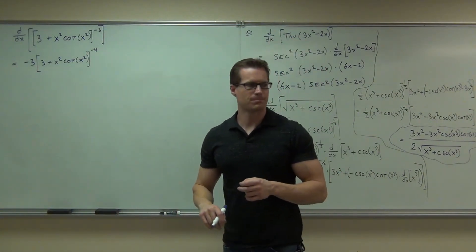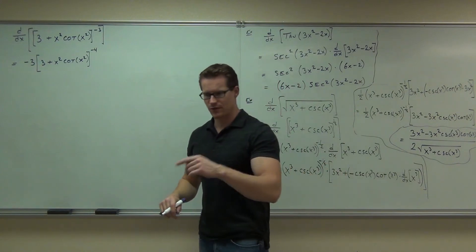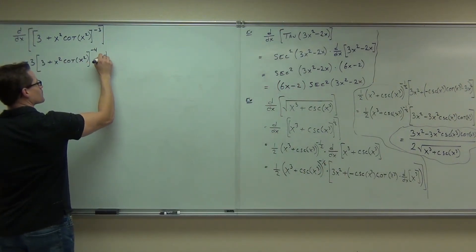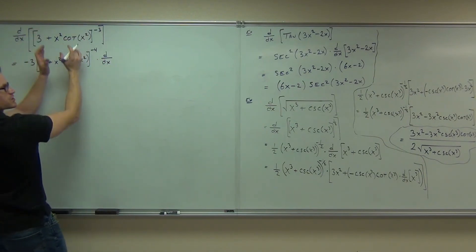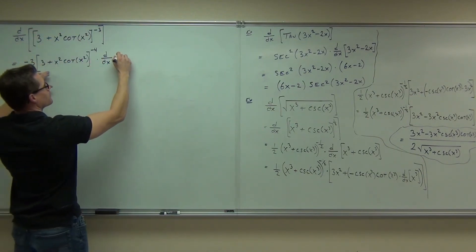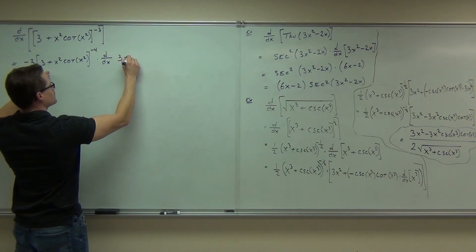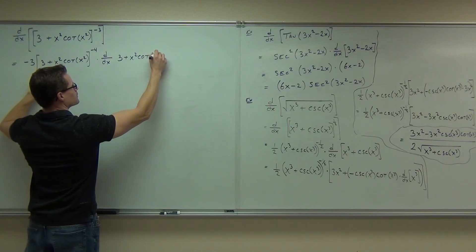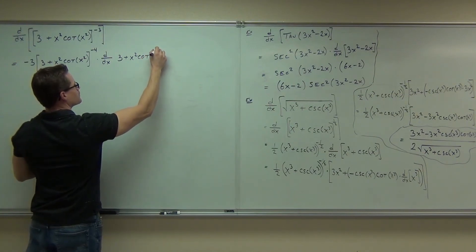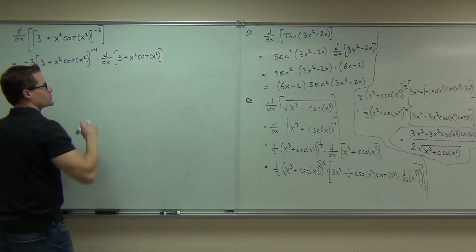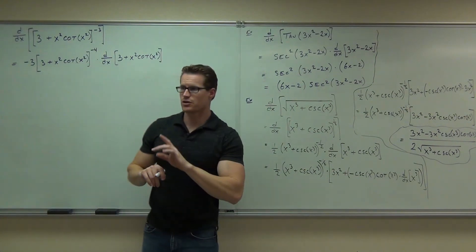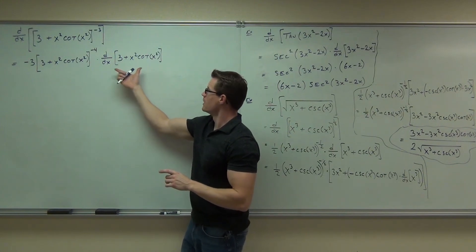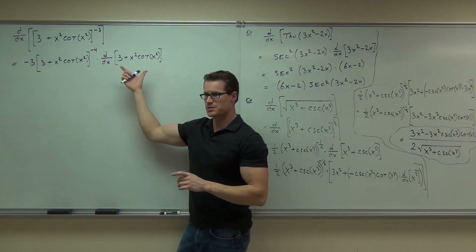That we multiply it by the derivative of the inside. Write that out. Go for the derivative of the inside right now. When we say the inside, we mean the entire expression that you basically ignored. So you should have that on your paper. Do you have that on your paper? Yes.